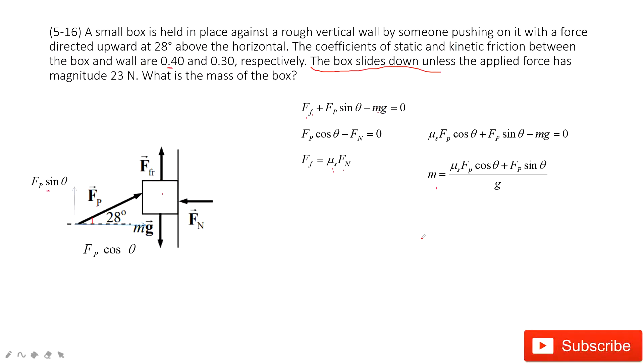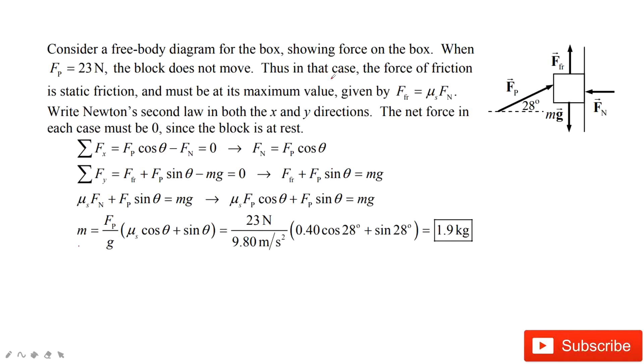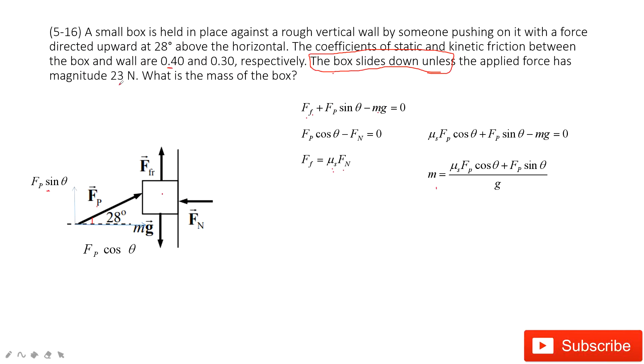So in this problem, the most important thing I think in this description is it tells you the box slides down unless the applied force has magnitude 23 newton. So in this one, it tells you we can consider the box just stationary. And if over this one, it will move. But when fp is 23 newton, the box is stationary. Thank you.